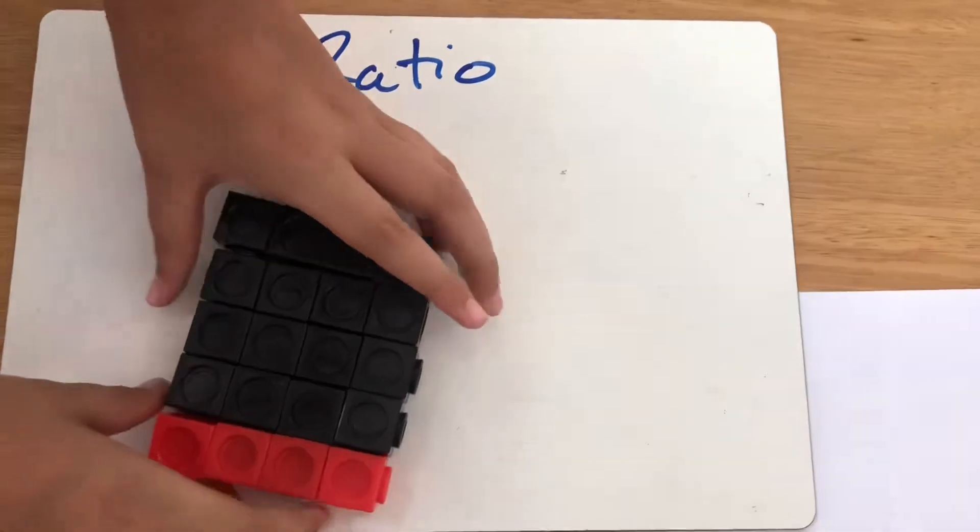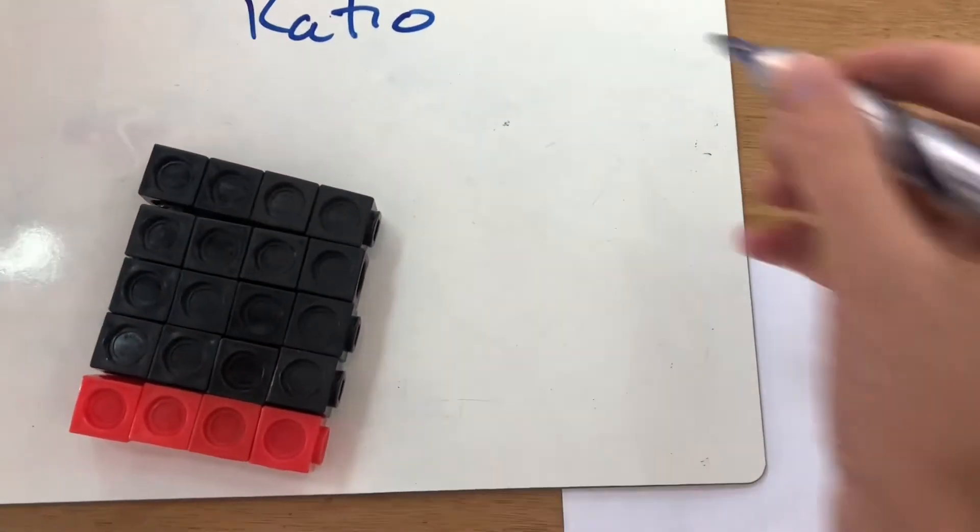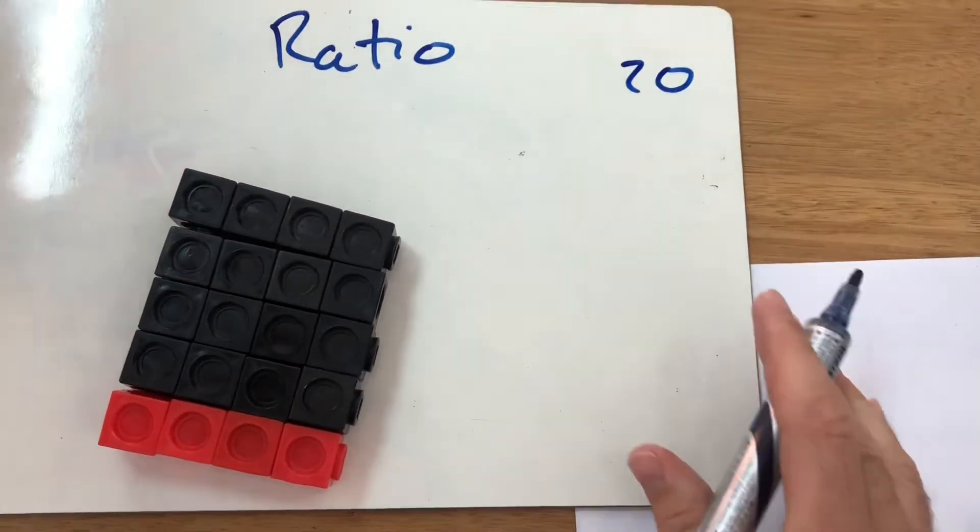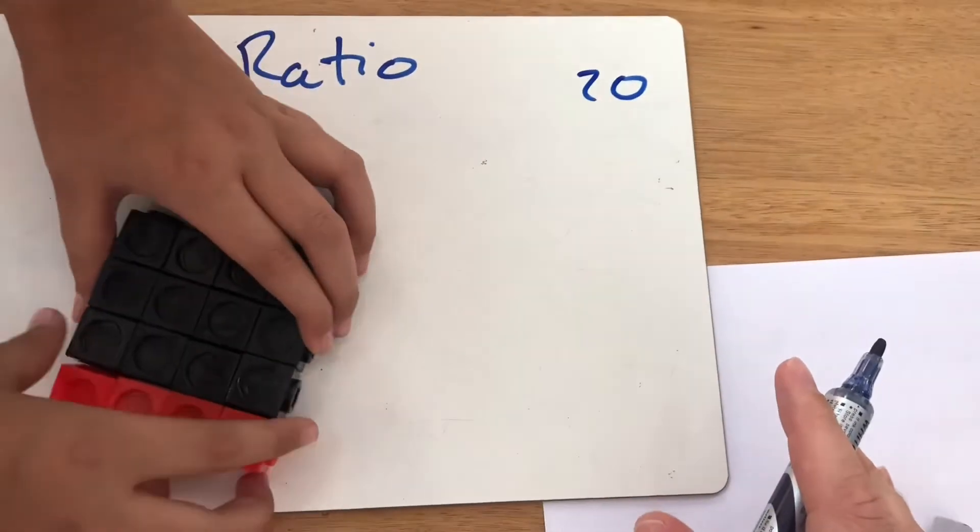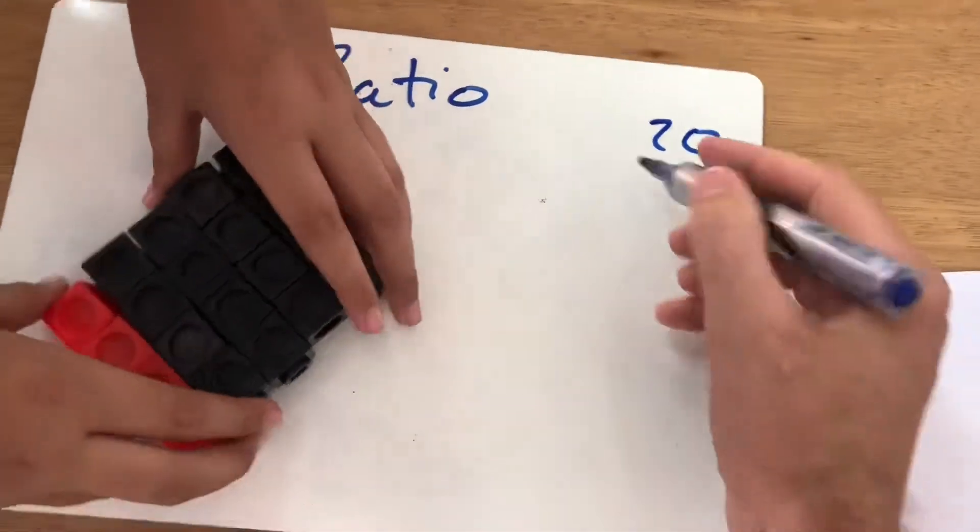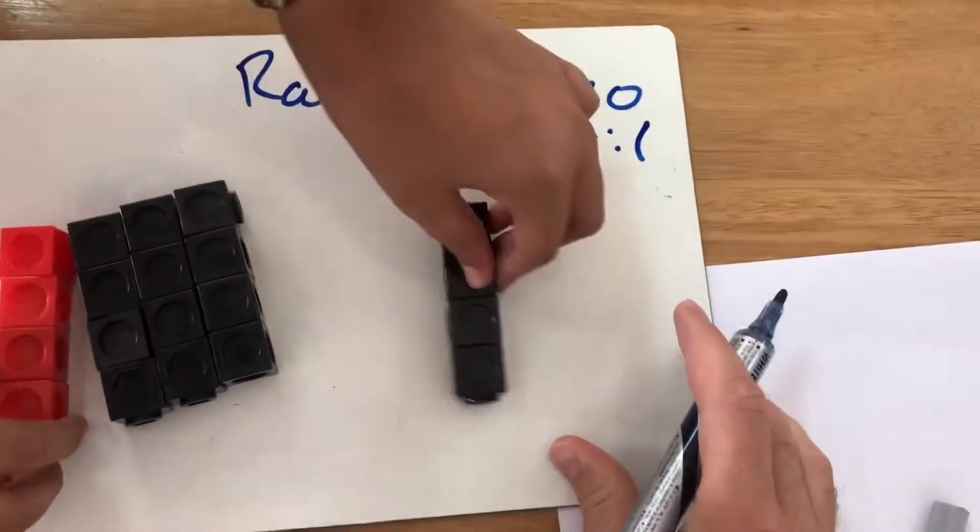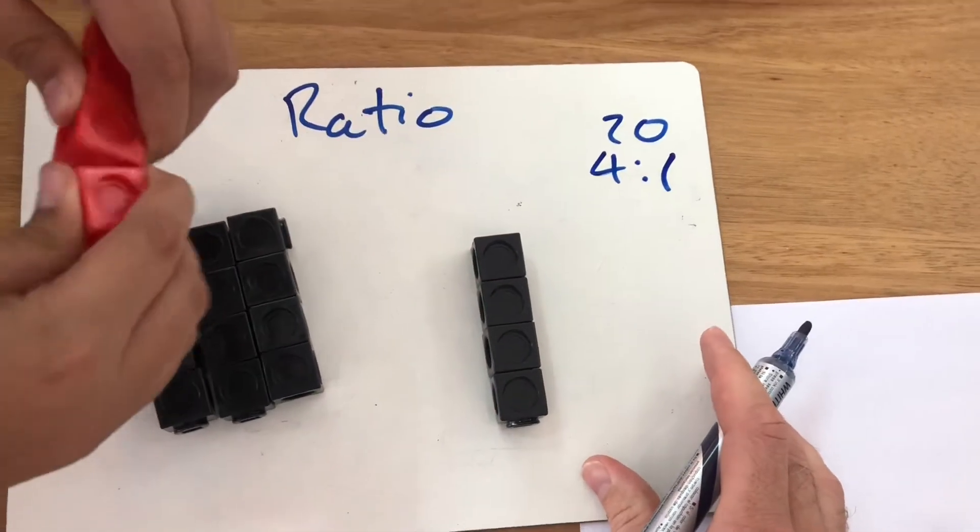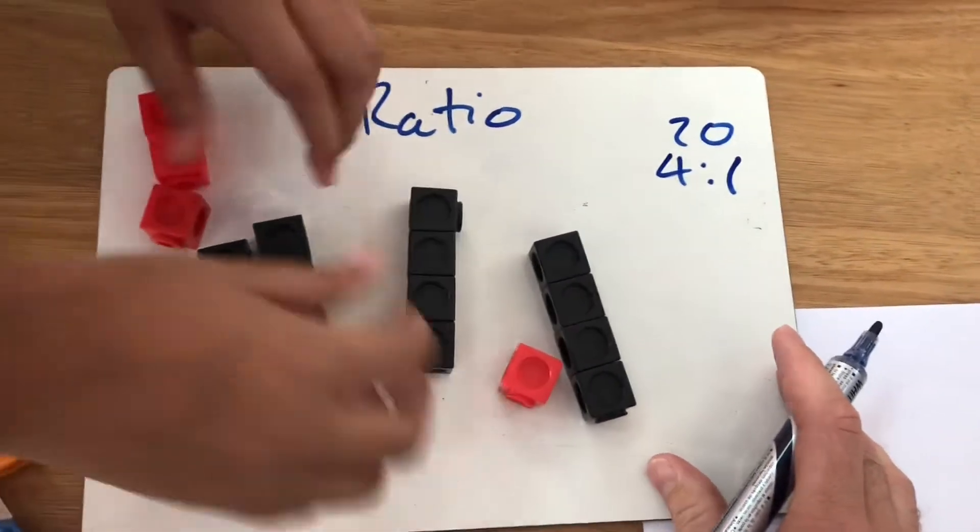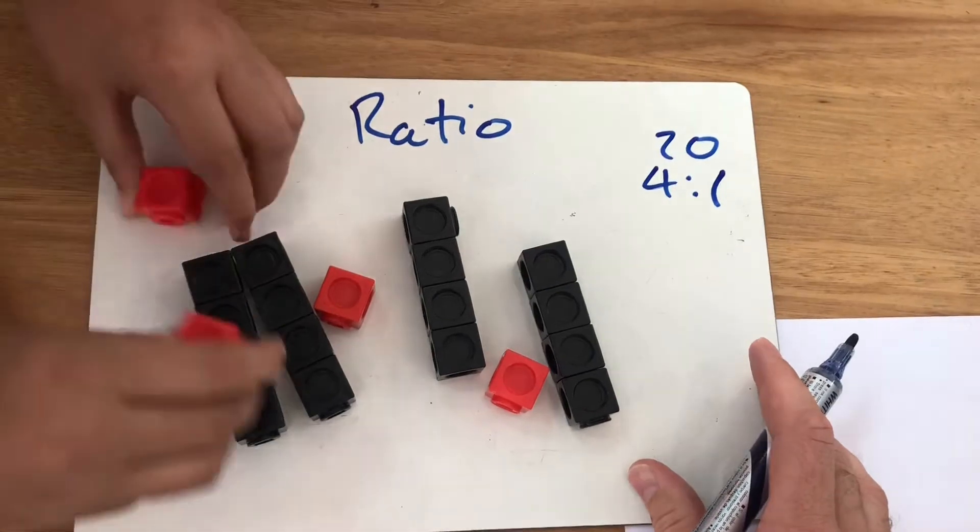First we have 20 as our total number of blocks. And here I'm gonna make it up to 4 to 1. Break it up in the ratio 4 to 1. Each four has one block. So each of those fours will get one block.